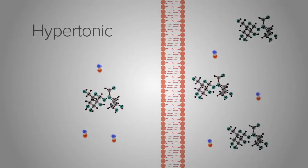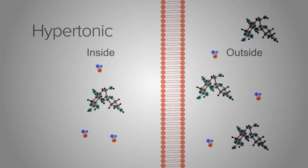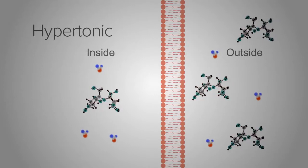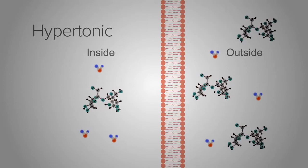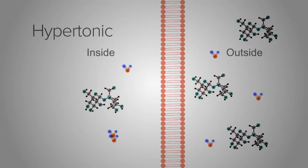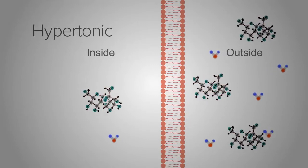In a hypertonic solution, there is a higher concentration of solutes outside of a cell than inside a cell. Because there is a higher concentration of sugar outside of the cell than inside, the water molecules move from the side of the membrane with the lower concentration of sugar to the side of the cell with the higher concentration of sugar.